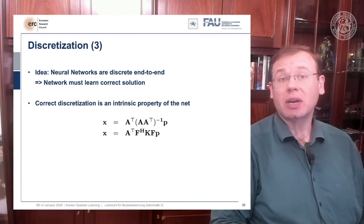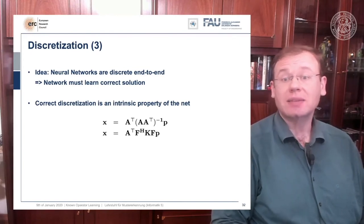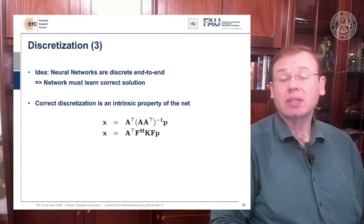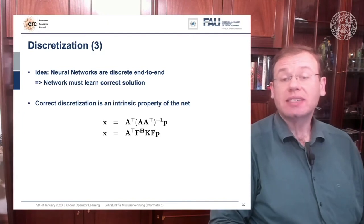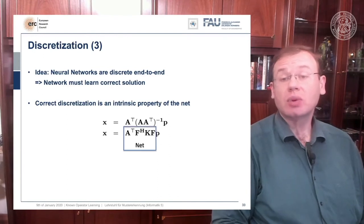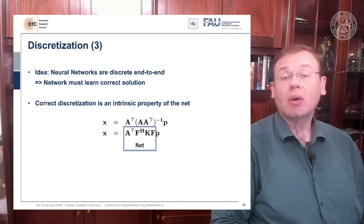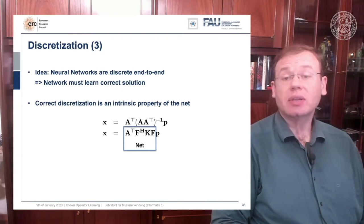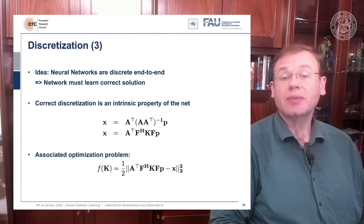Instead here we showed that by knowing that it takes the form of a convolution, we can express our inverse simply as P times the Fourier transform, which is also just a matrix multiplication. Then K is a diagonal matrix that holds the spectral weights, and then an inverse Fourier transform that is denoted as F Hermitian here, and then you back project. So we can simply write this up as a set of matrices, and by the way this would then also define a network architecture.